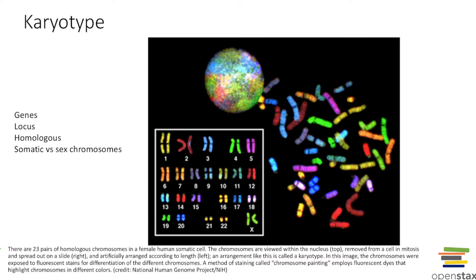We have a karyotype here. We can see the 23 different sets of chromosomes — the first sets, one through 22, are going to control somatic information. This last set is the 23rd set, which has our sex chromosomes. If it was two X's, we would have a female. If it was an X and a Y chromosome, then that would code for a male. So the last pair of the 23 pairs codes for the sex chromosomes.